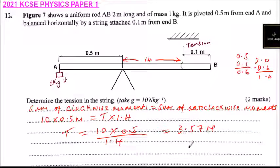So the tension is 3.57 N that is holding the system at equilibrium. That's how you do that and you get yourself two marks.